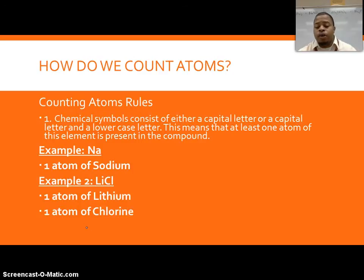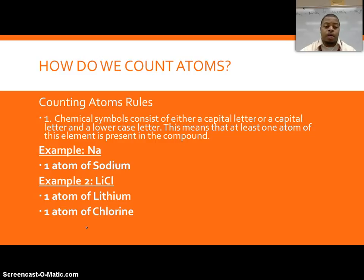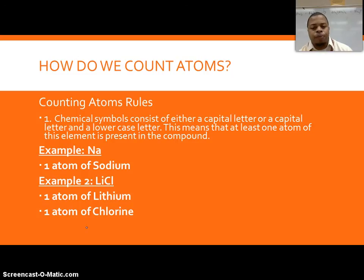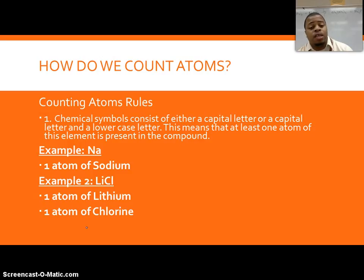The first thing we've gone over is how we count atoms. If I'm given a chemical reaction, I have to know the different parts of it — what are the compounds, what are the elements, and how many of each I have on each side. Rule one: a chemical symbol consists of either a capital letter or a capital letter and a lowercase letter, indicating at least one atom of that element. I'll go through this fairly quickly, so pause or rewind if you need to make sure you have it in your notes.